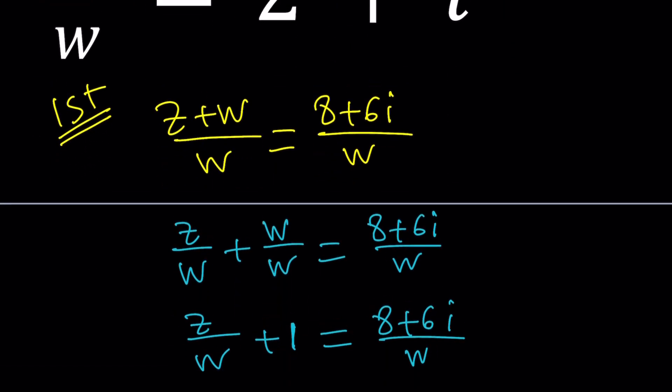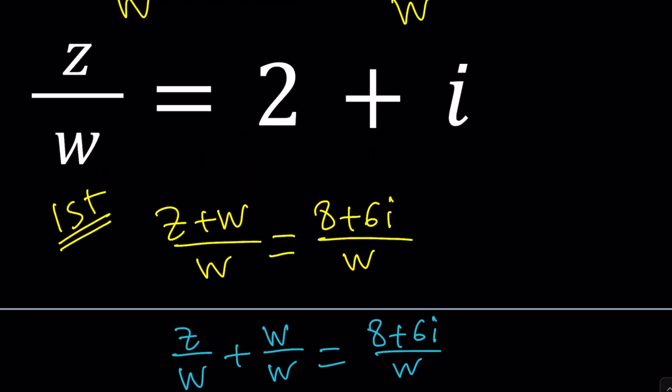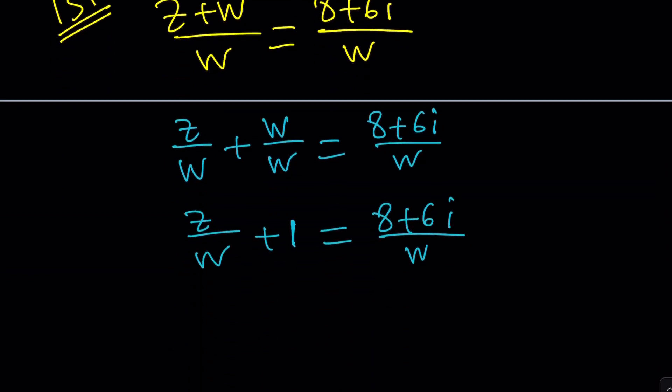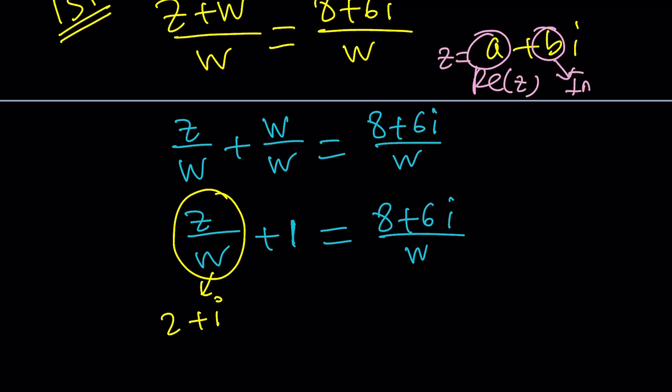But we do know z over w is equal to 2 plus i. And that's nice. Let's go ahead and substitute 2 plus i for this. What is 2 plus i plus 1? How do you add complex numbers? You add the real parts and the imaginary parts. Wait a minute. What is the real and imaginary parts? Let's quickly talk about it. This is the real part. This is the imaginary part of a number. Let's say z can be written as fellows and real and imaginary parts. Make sense? So 2 plus i plus 1 is 3 plus i.